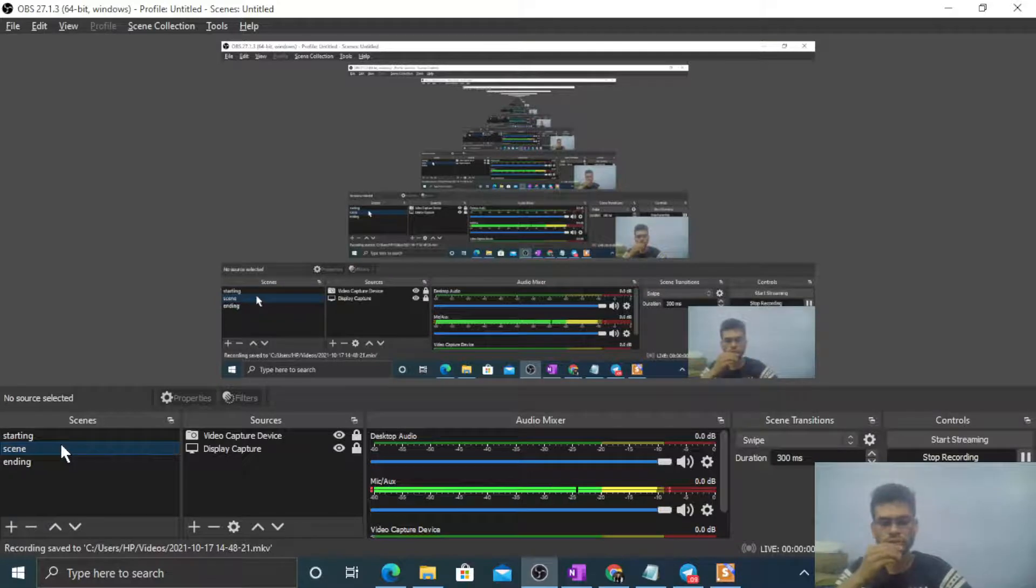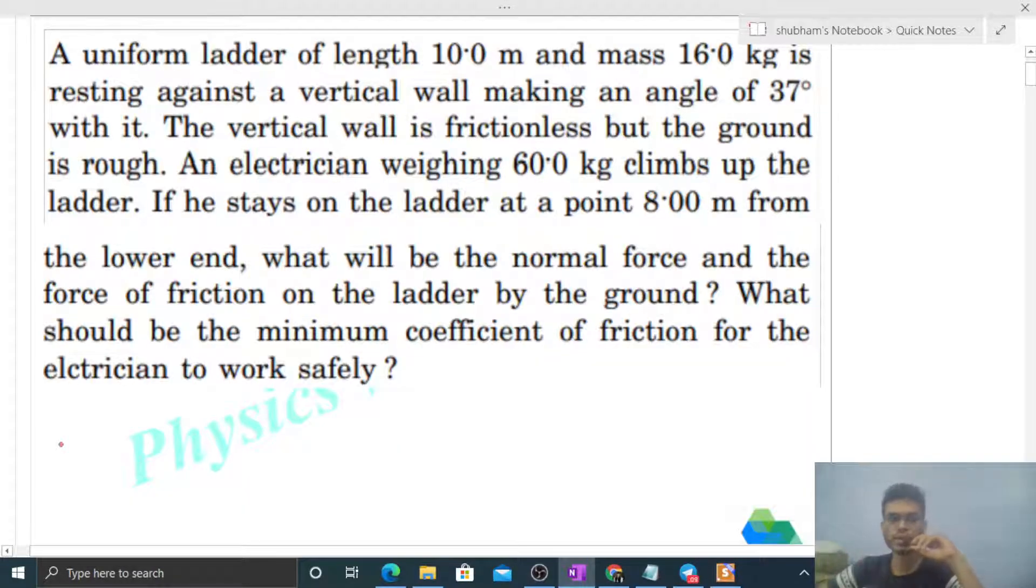Okay, hi everyone. So today let's discuss this interesting problem. It says a uniform ladder of length 10 meter and mass 16 kg is resting against a vertical wall making an angle of 37 degree with it. The vertical wall is frictionless but the ground is rough. An electrician weighing 60 kg climbs up the ladder. If he stays on the ladder at 8 meter from the lower end, what will be the normal force and the force of friction on the ladder by the ground? What should be the minimum coefficient of friction for the electrician to work safely?